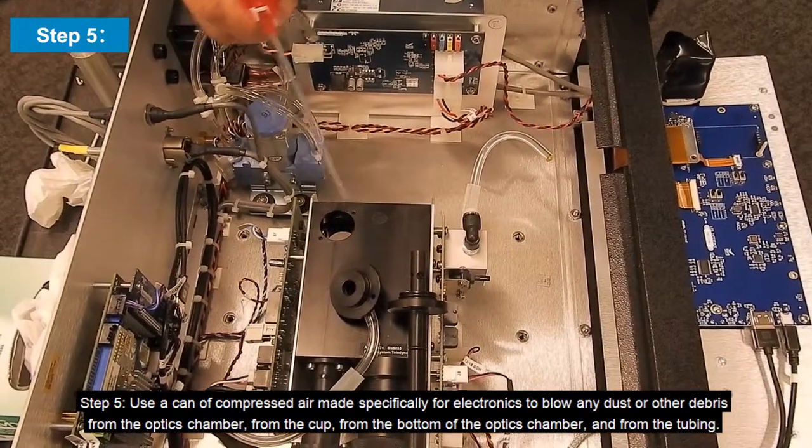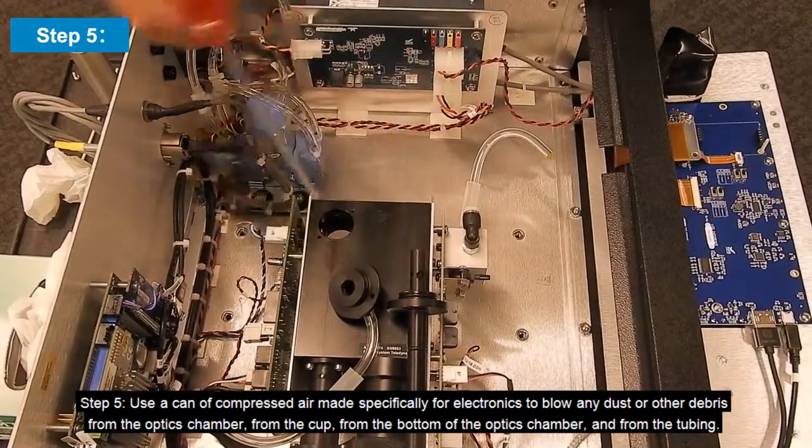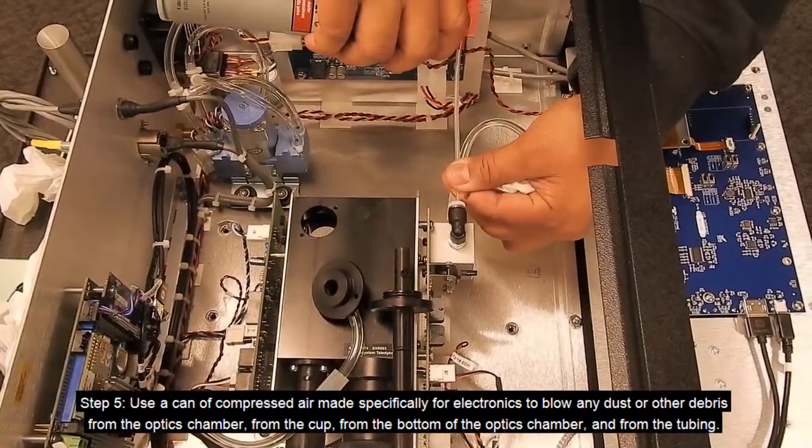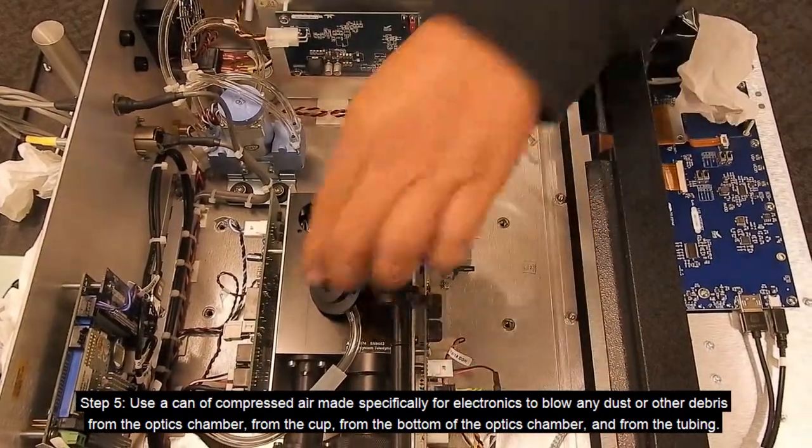Step 5: Use a can of compressed air, made specifically for electronics, to blow any dust or debris from the optics chamber, cup, bottom of the optics chamber, and tubing.